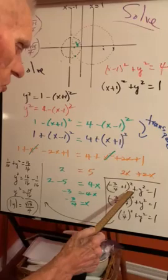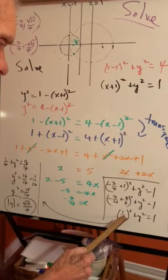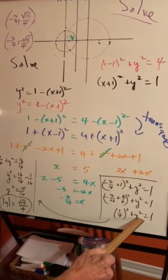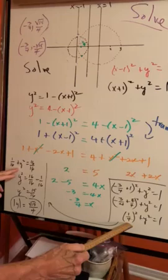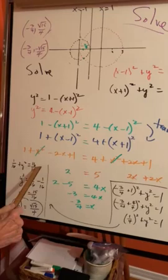So I've changed the one to four quarters, so this will equal a quarter plus y² is one. Now I want to isolate the y². We have to go way over here. So a quarter squared is 1/16 plus y² is one.